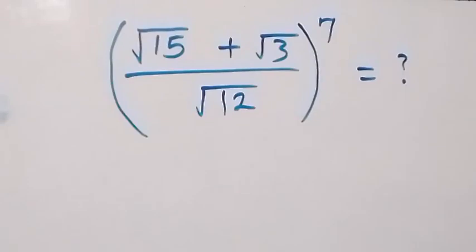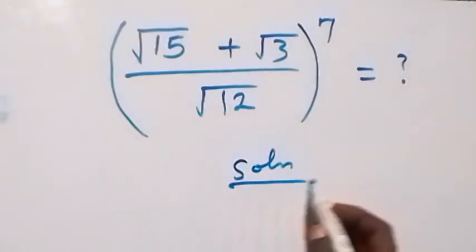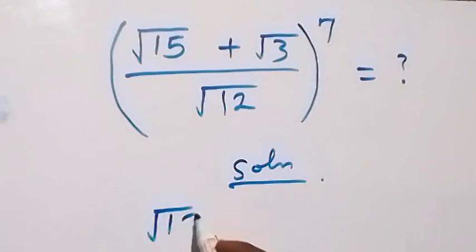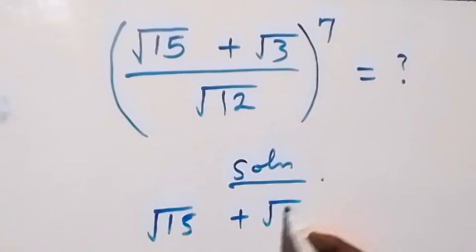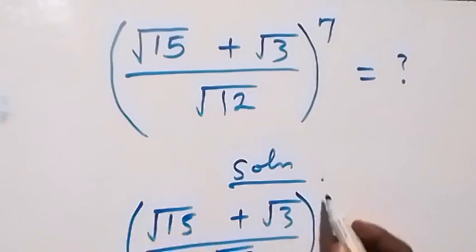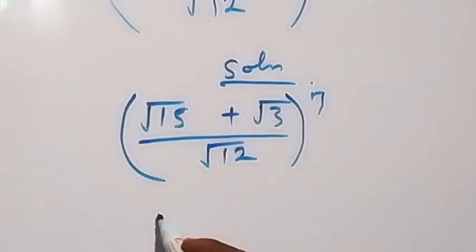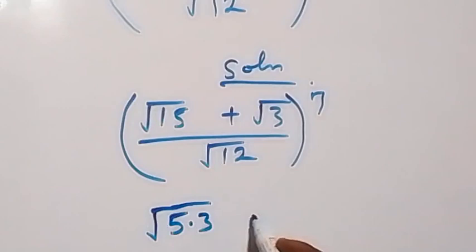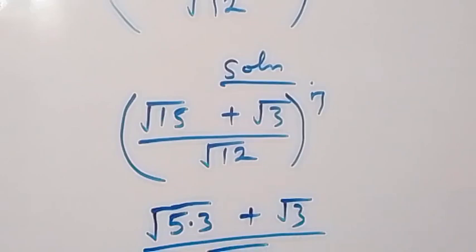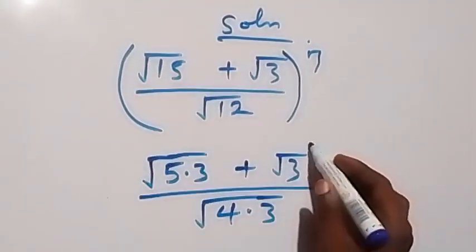Hello, welcome. We will solve this square root problem. What is given is the square root of 15 plus the square root of 3, over the square root of 12, and the whole expression is raised to the power of 7.